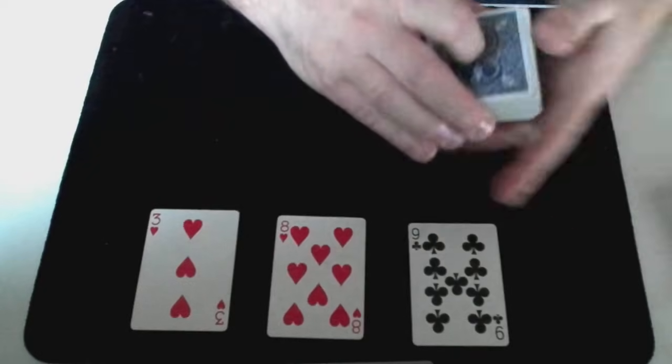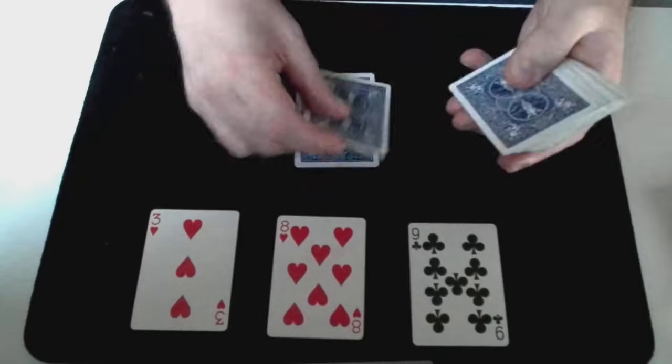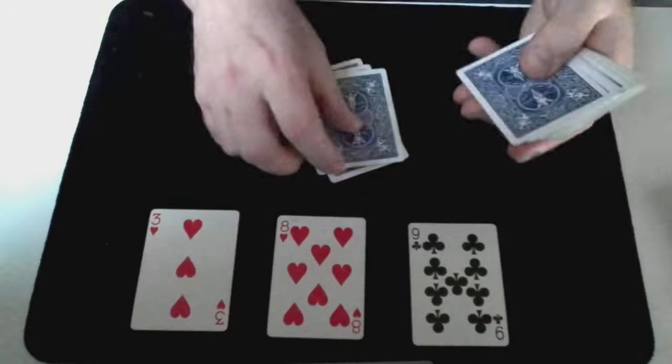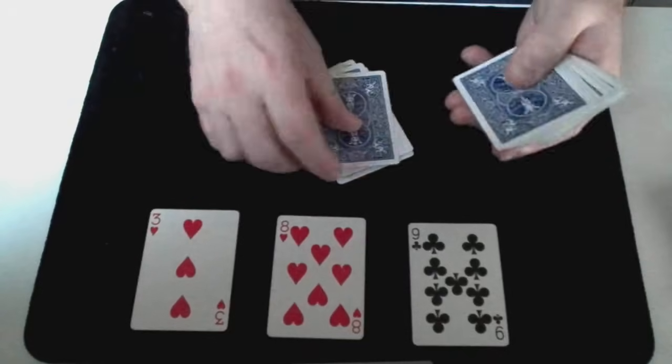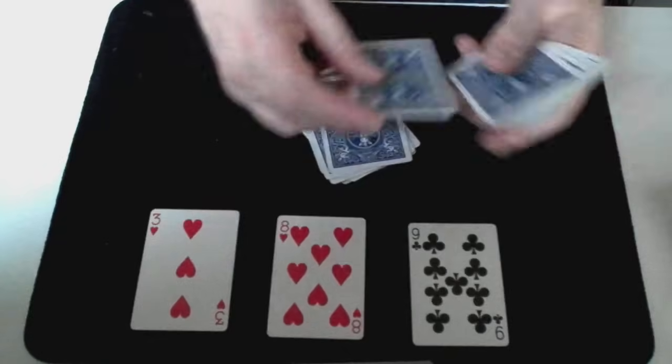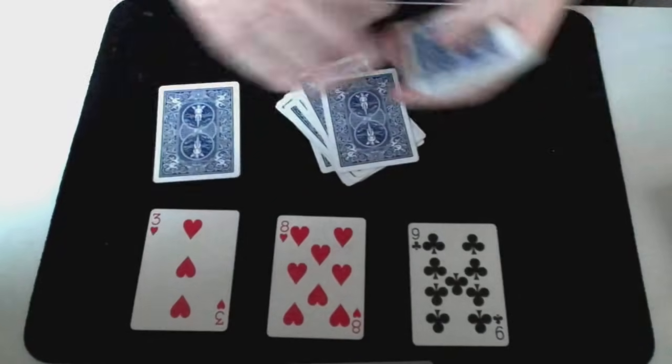There's still twenty cards down from the pack. One, two, three, four, five, six, seven, eight, nine, ten, eleven, twelve, thirteen, fourteen, fifteen, sixteen, seventeen, eighteen, nineteen. This is the twentieth card.